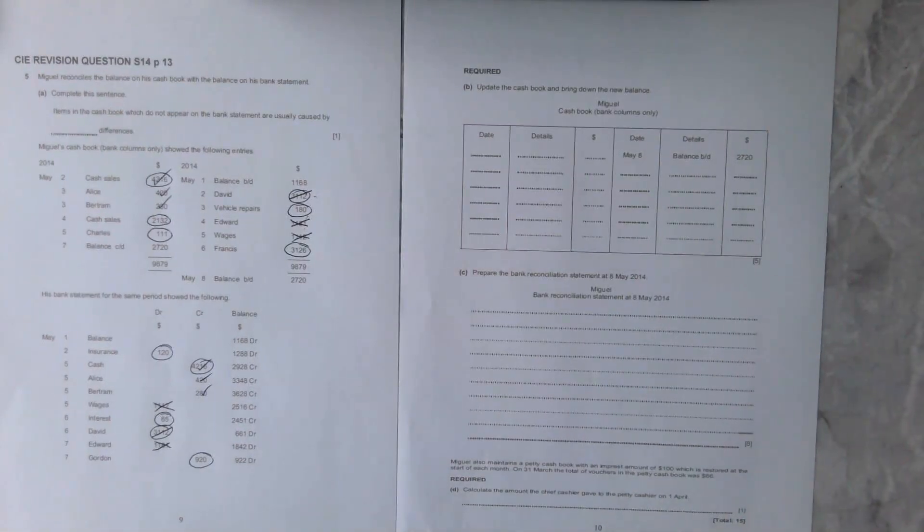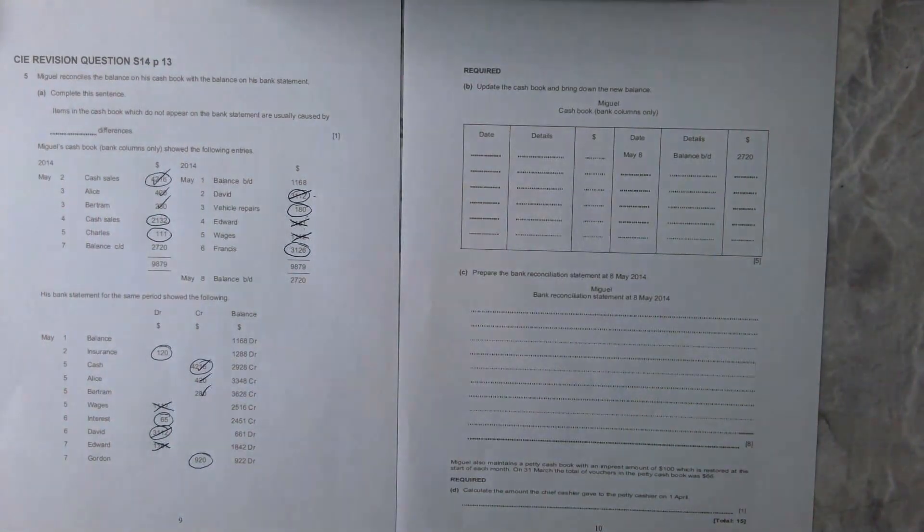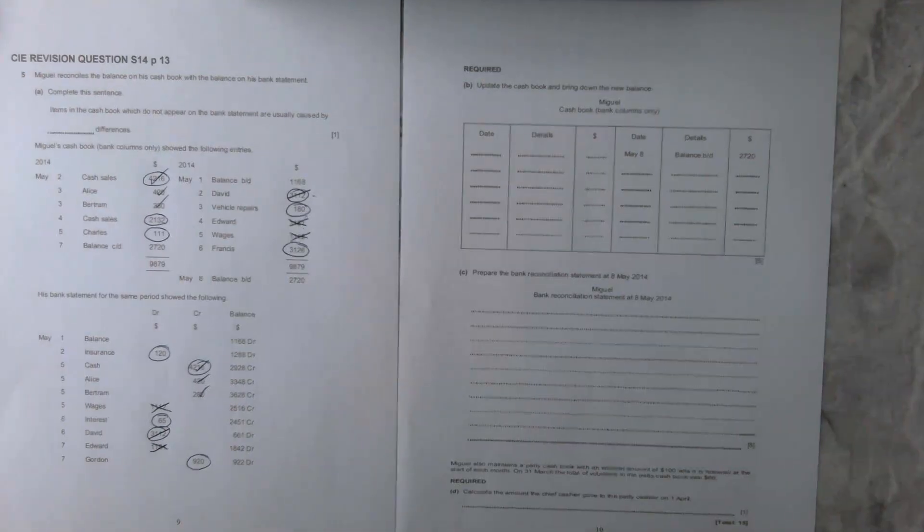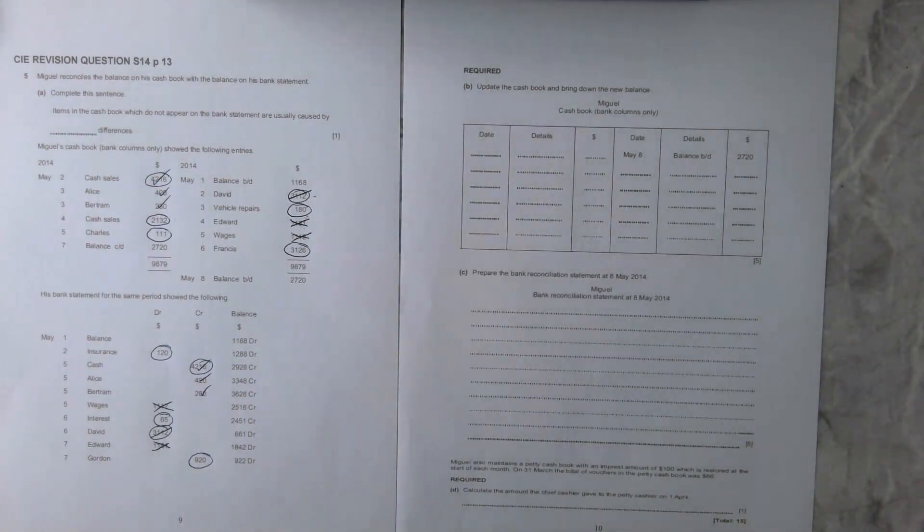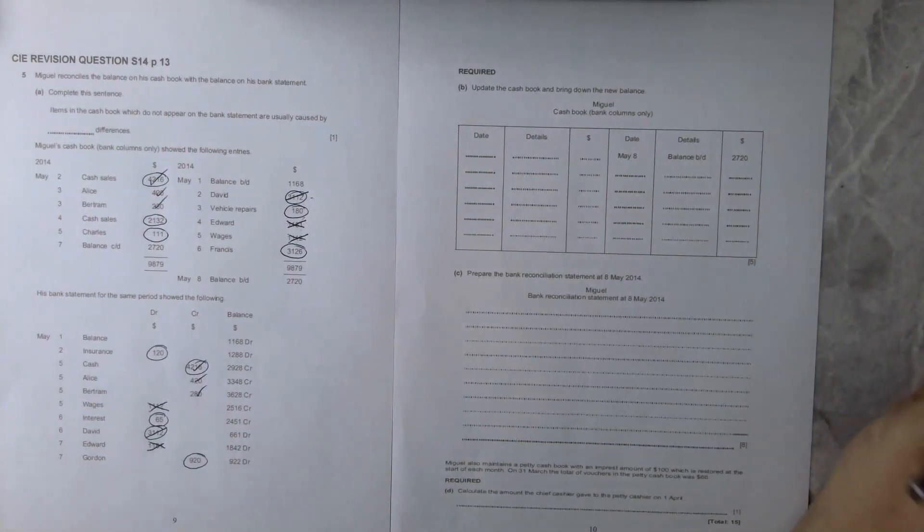This is wanting us to update our cash book. What we need to do is look from the 8th of May. Our balance is already given to us on the right hand side at balance day, which was 2,720.